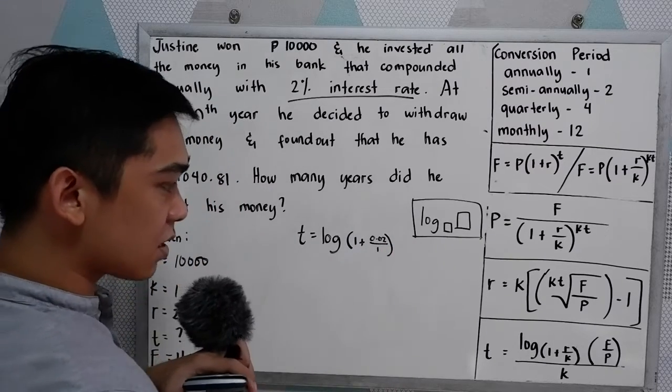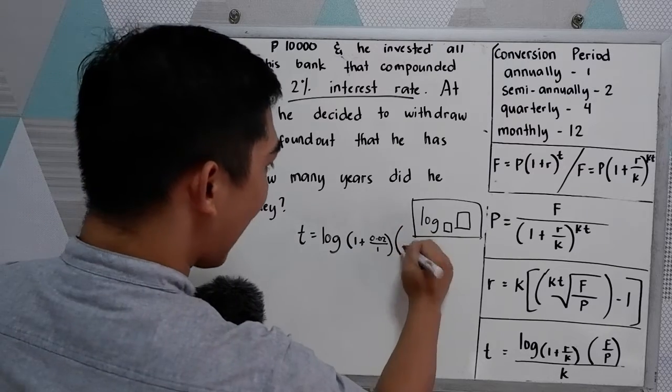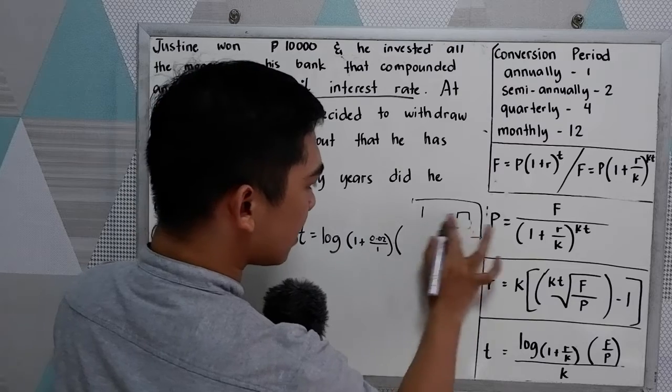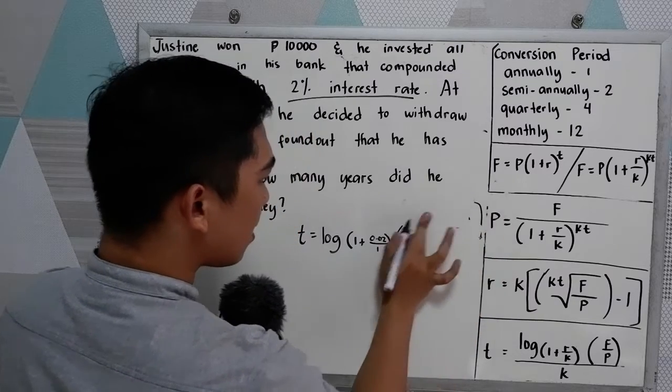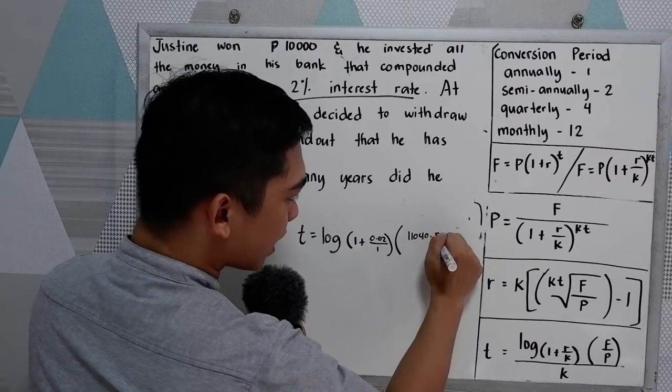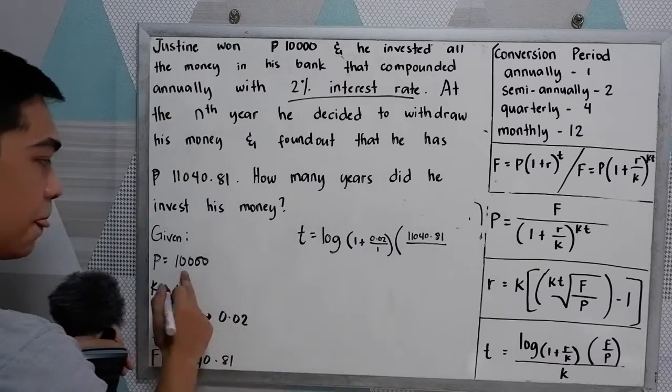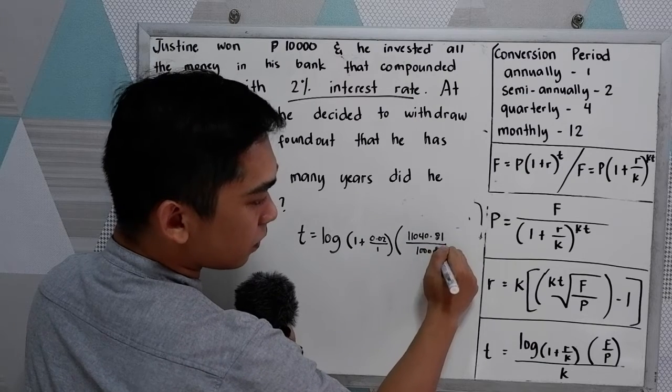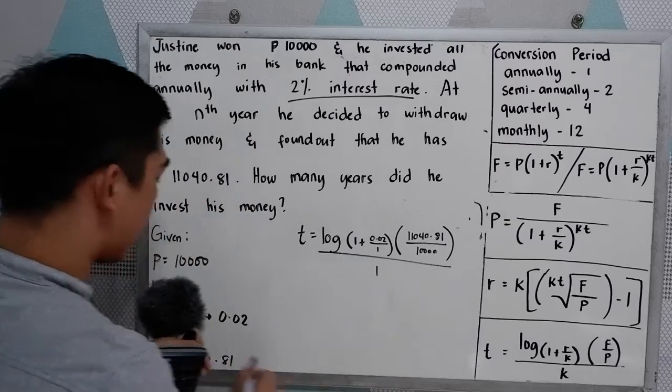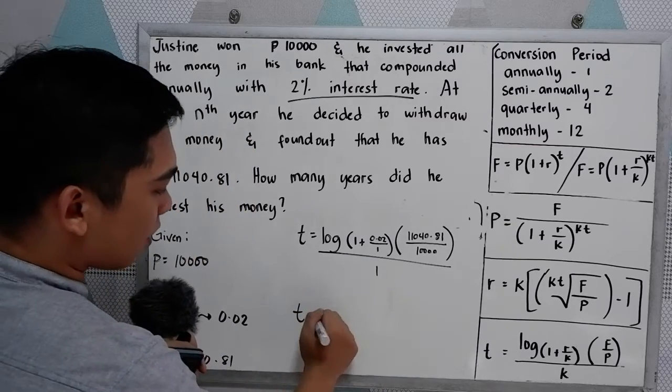times F/P. F/P, I'm going to erase this, 11,040.81 all over 10,000.